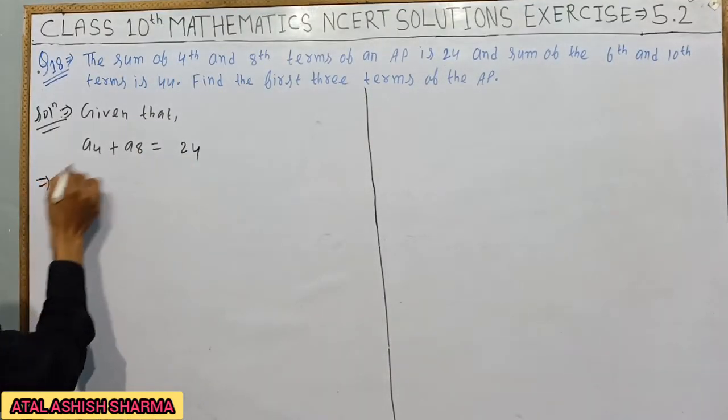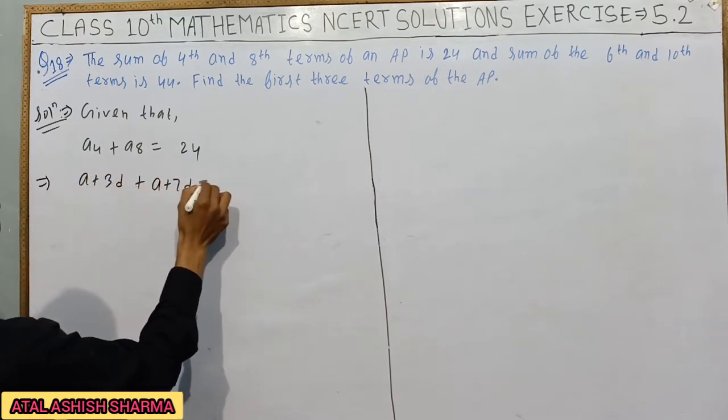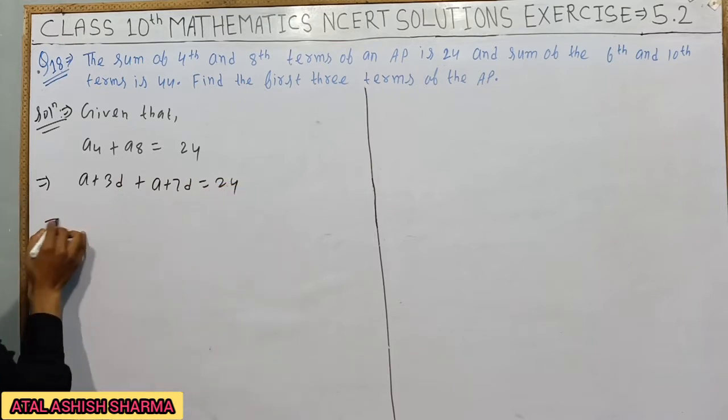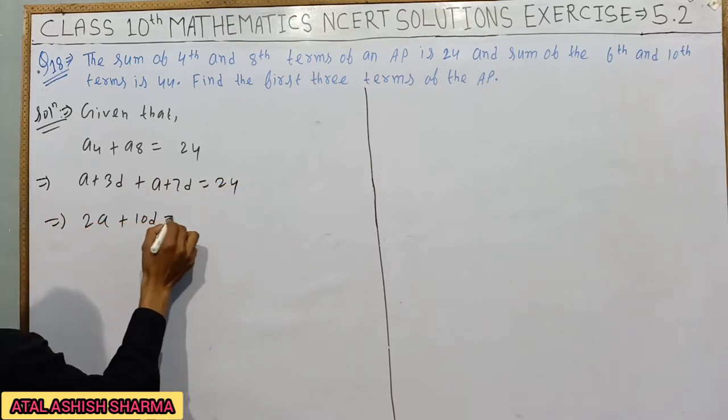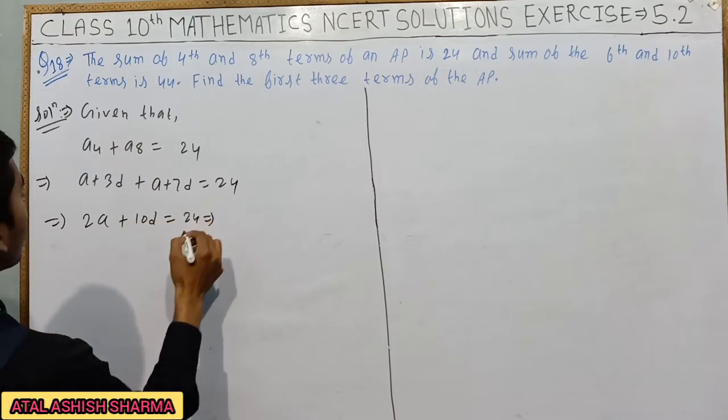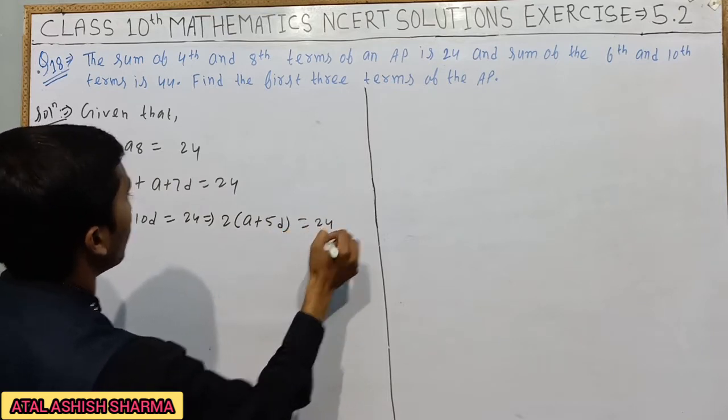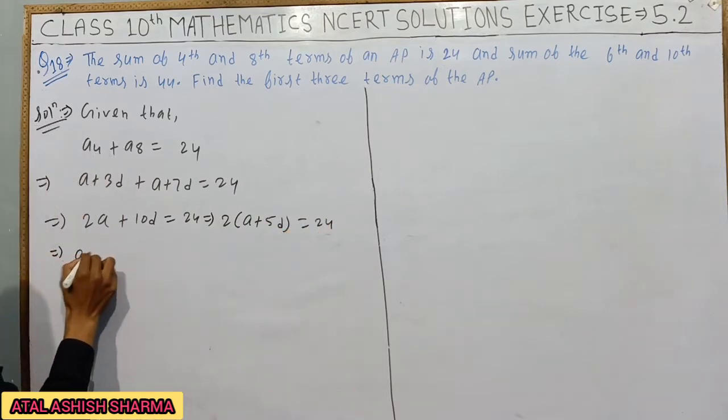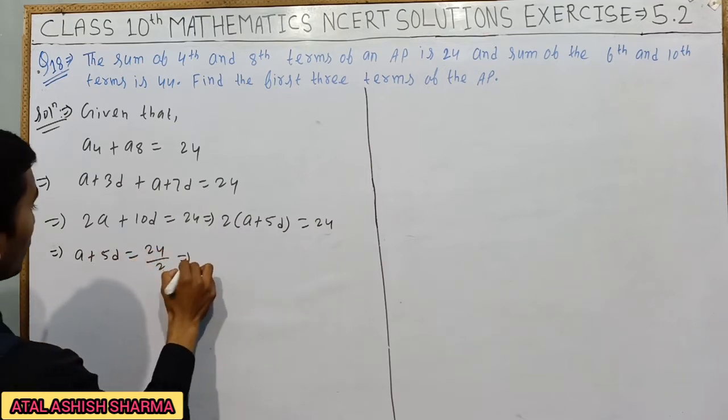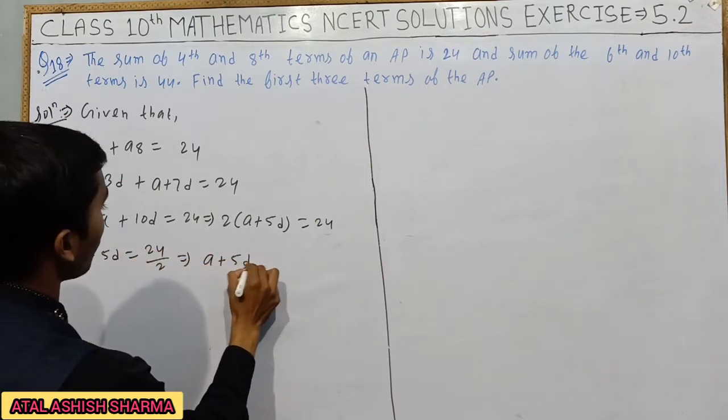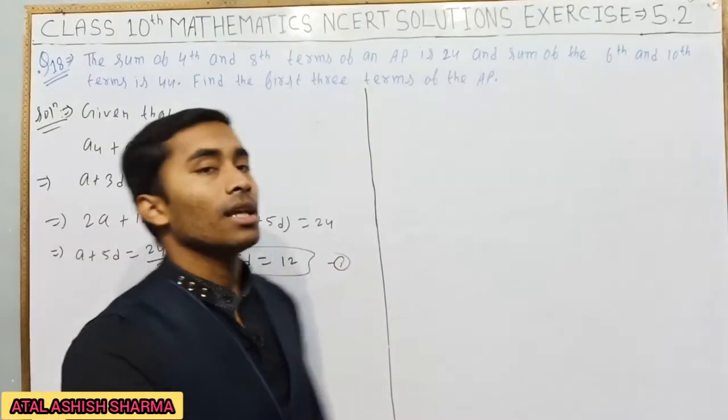A4 plus A8 equals 24. This becomes 2a plus 10d equals 24. Taking 2 common, we get a plus 5d equals 24 upon 2, which implies a plus 5d equals 12. This is your first equation.